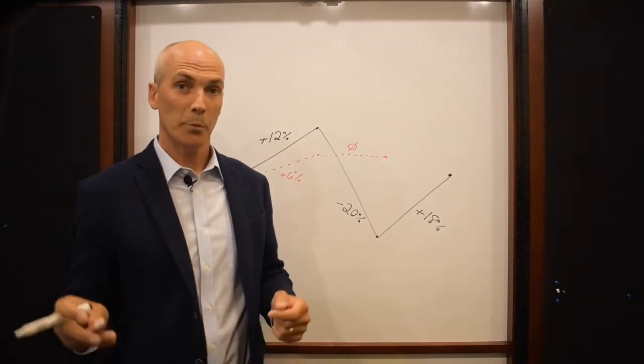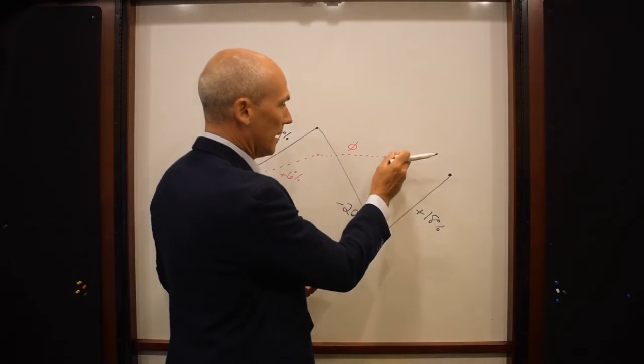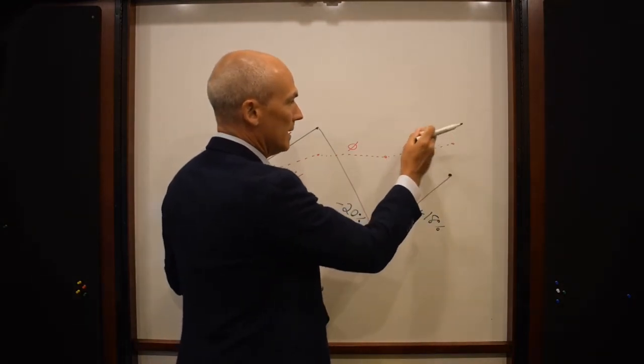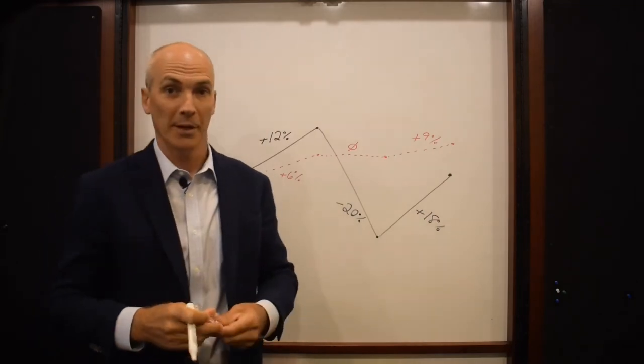So in a 50% participation rate indexed annuity, your interest credit for that period would be 9%. That's 50% of the 18.